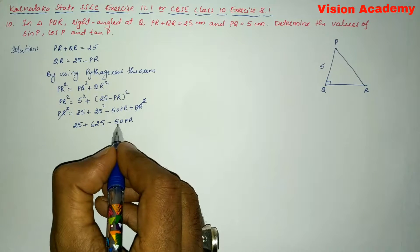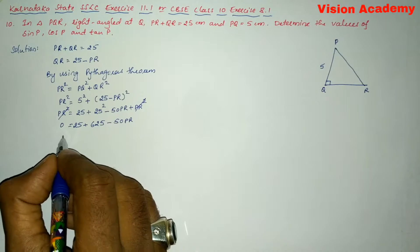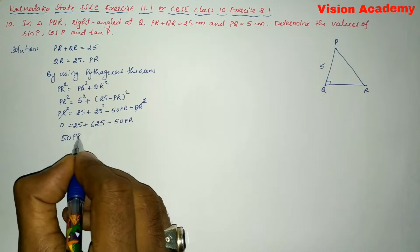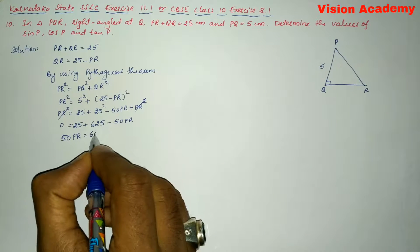Now, let us transform this minus 50 PR from RHS to LHS. So it will become plus 50 PR is equal to 25 plus 625 gives us 650.